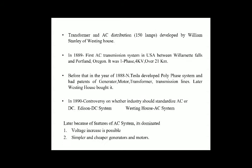So, the limitation of DC regarding transformers led to AC distribution, which was developed by Stanley of Westinghouse. In 1889, the first AC transmission system in the USA was built between Willamette Falls and Portland, Oregon. It was a single-phase 4 kV line over 21 km.